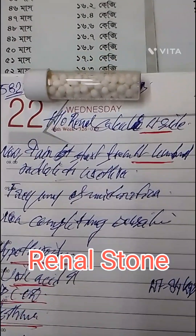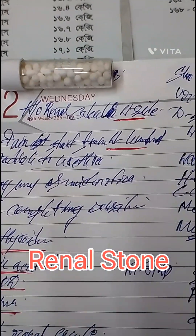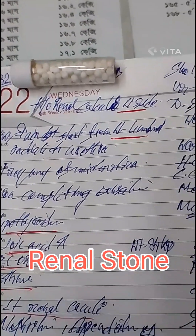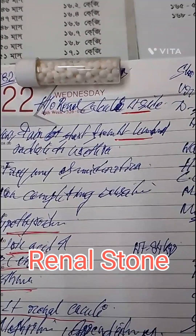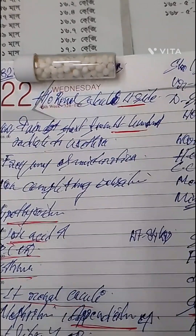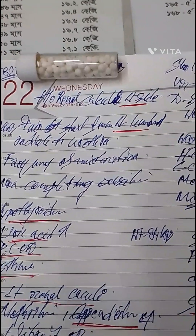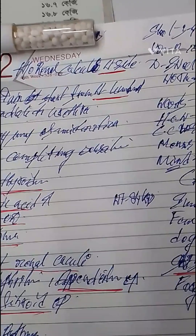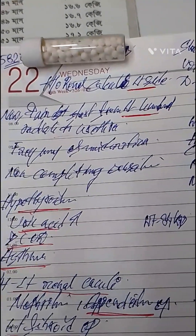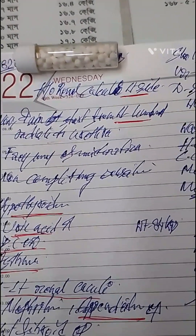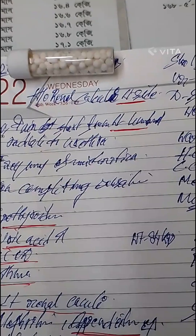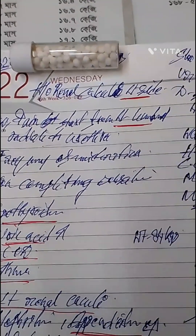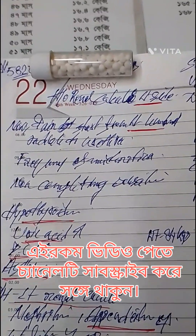Here we have the history of renal calculi, left side. Calculi is calculus — calculus means stone. This was confirmed on USG. There is history of renal calculi on the left side.